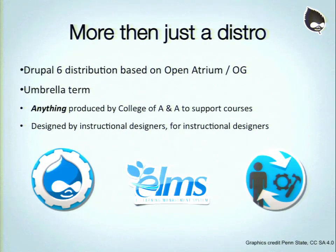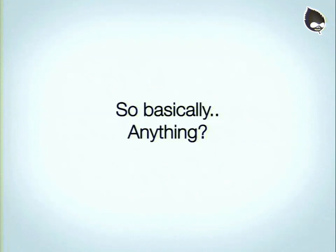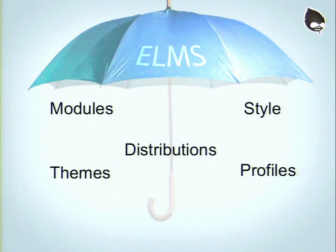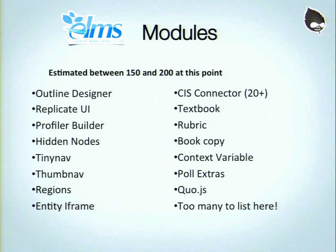So what is ELMS? ELMS is more than just a distribution — it's kind of more of an initiative. It's a saying that anything produced for ELMS, e-learning courses at the College of Arts and Architecture, can be released back publicly. This has spiraled way out of control from one site and one module into lots of modules, themes, distributions, a style guide, and multiple installation profiles. We're talking between 150 and 200 modules if we're counting a .module file as a module.